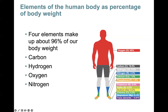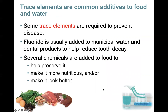What about these other elements? We said about 25 are considered essential for life — while they are essential, they're not found in the same percentage or abundance. We refer to those as trace elements. Trace elements are chemical elements necessary for sustaining life, existing in smaller, more minute amounts. Trace elements are common additives to our food and water that provide some type of benefit for us.